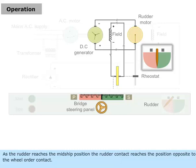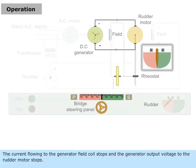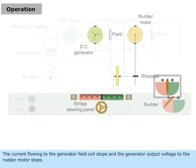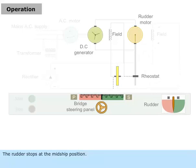As the rudder reaches the mid-ship position, the rudder contact reaches the position opposite to the wheel order contact. The current flowing to the generator field coil stops, and the generator output voltage to the rudder motor stops. The rudder stops at the mid-ship position.